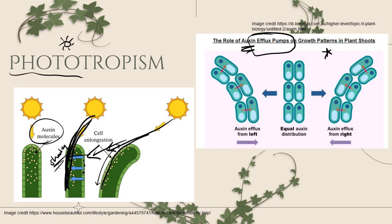Another image shows the same concept: auxins get pumped to the shady side, those cells elongate, and the plant bends toward the light. If the sun is on the other side, the auxins move there instead and bending occurs in that direction. If we have direct sunlight with no unequal exposure, the auxin stays equally distributed and the plant grows straight up instead of sideways.